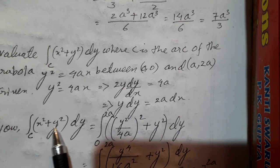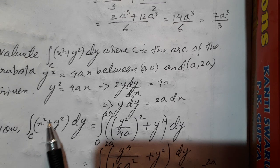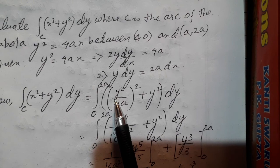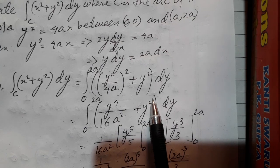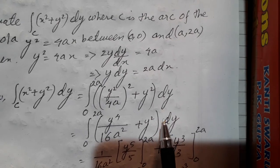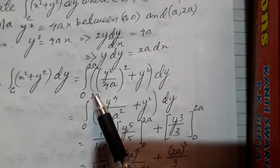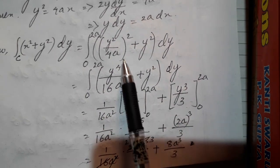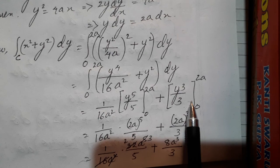So the integration along C of x squared plus y squared dy. In place of x, I replace with the value from the curve: x equals y squared by 4a. Putting this value in, I get y to the power 4 by 16a squared plus y squared, dy. I'm integrating with respect to y. Looking at the range of y, it is from 0 to 2a. So we integrate from 0 to 2a, getting y to the power 5 by 5 from 0 to 2a, plus y to the power 3 by 3 from 0 to 2a.